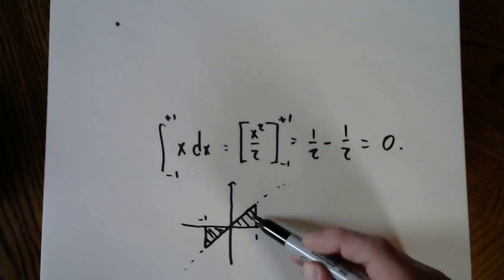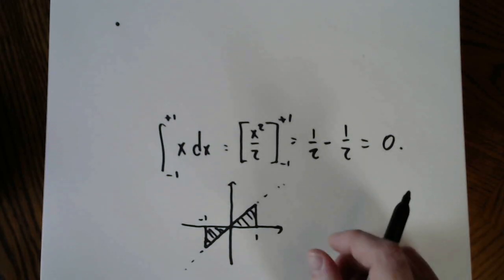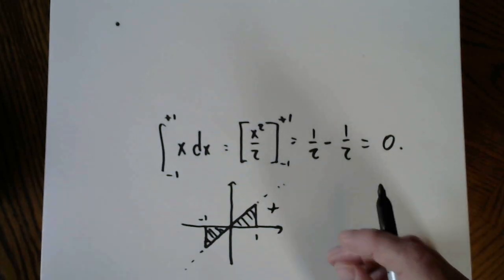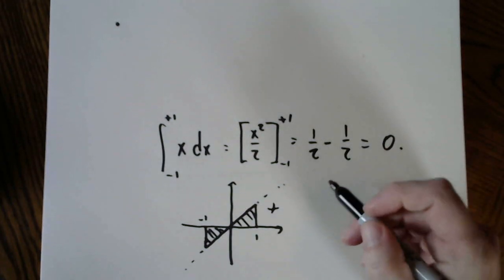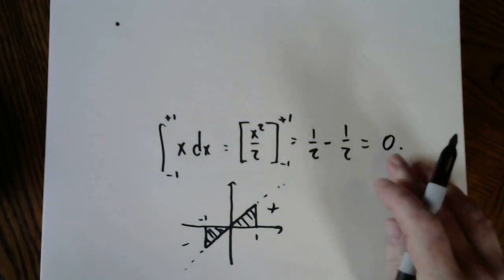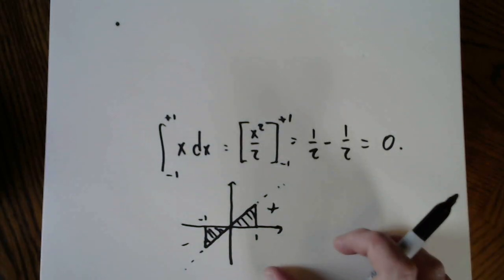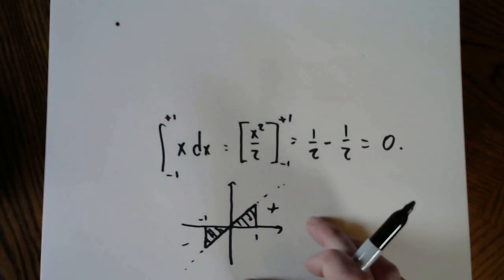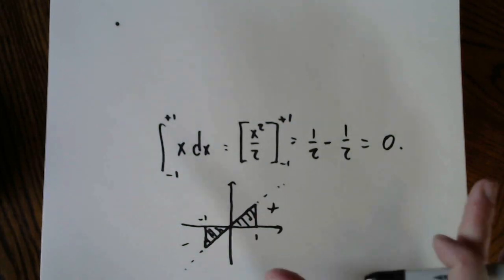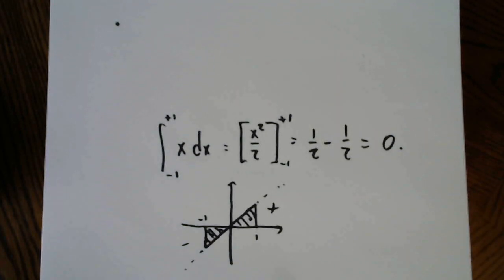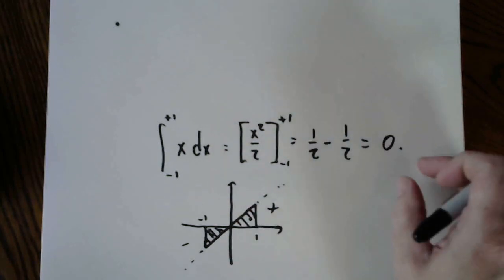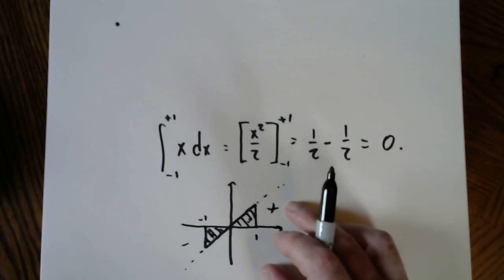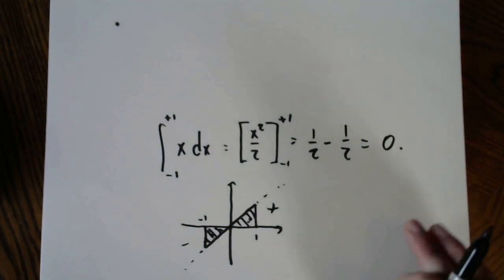Getting zero doesn't make sense because I can see there's area there. The point is: areas above the x-axis give positive contributions in this mathematical context, while areas below give negative contributions. Here a positive one half and a negative one half cancel out. In this section we're interested in true geometric area — so the result I'd like to see is actually 1, a half and a half.